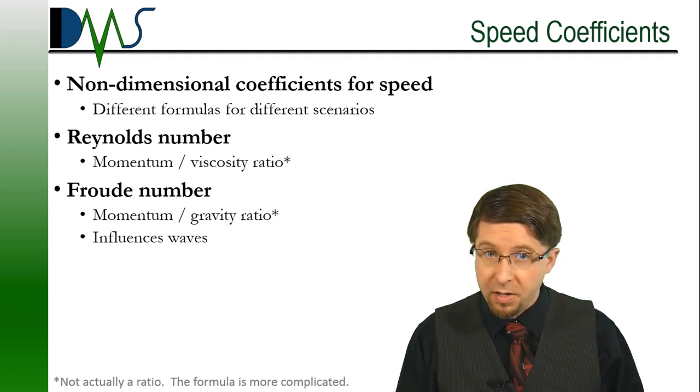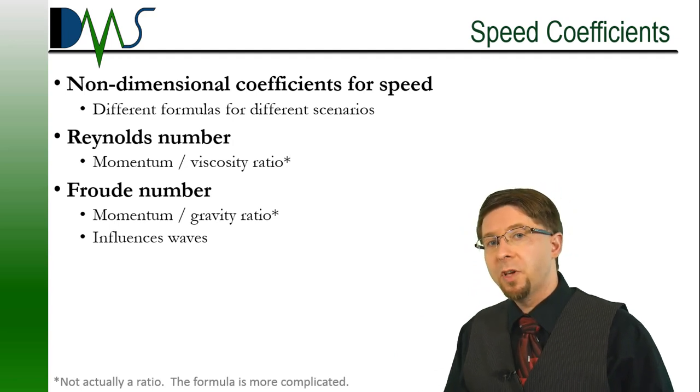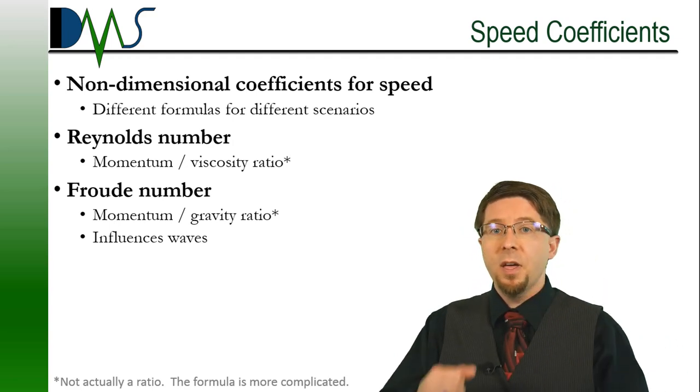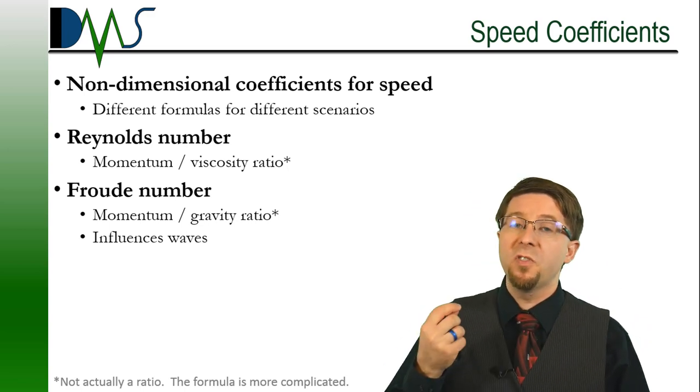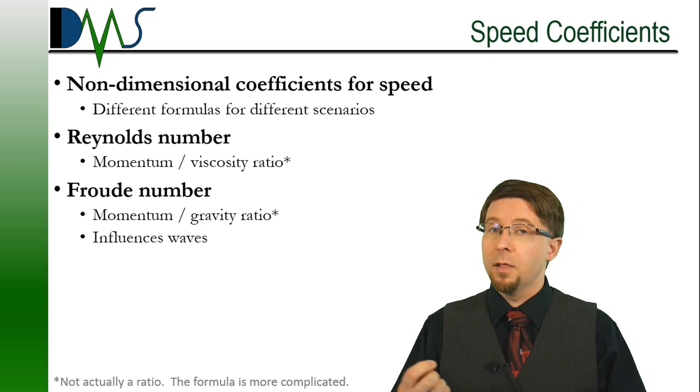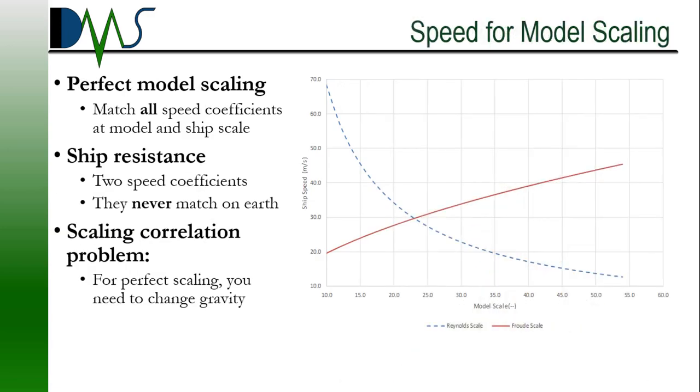William Froude is another big name. He was famous for the Froude number, which centered around the relation between Earth's gravity and the momentum of water. The Froude number is particularly important because we use it to characterize waves, like the waves coming off of your ship. So getting back to the question, how does all of this tie into the scaling correlation problem?